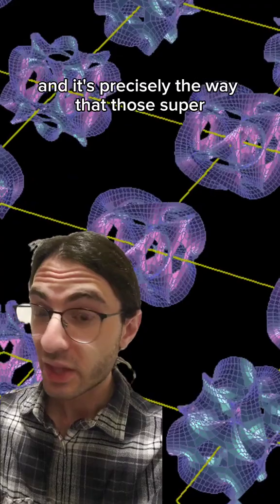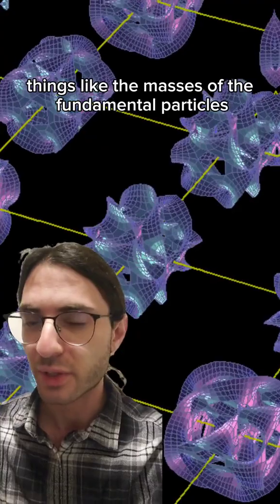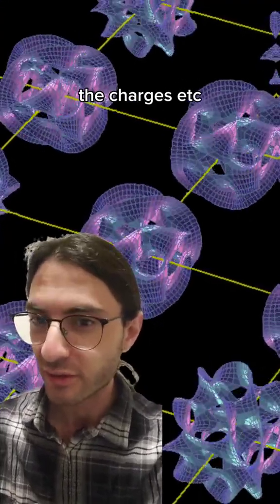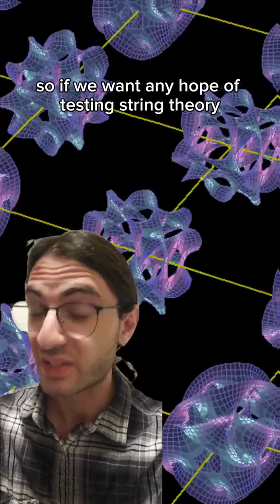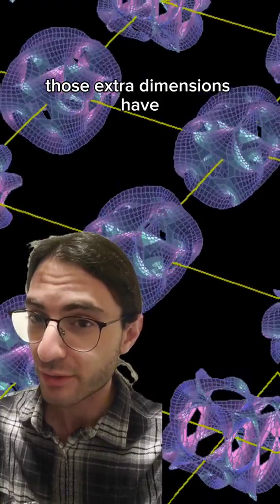And it's precisely the way that those superstrings wrap around the extra dimensions that determines our laws of physics - things like the masses of the fundamental particles, the charges, etc. So if we want any hope of testing string theory, it's vitally important to figure out what kind of shape those extra dimensions have.